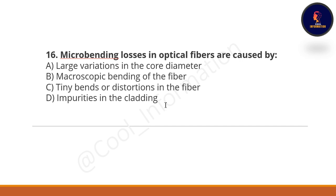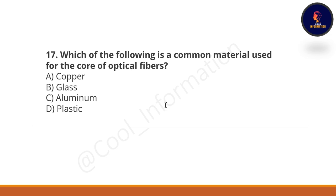Question 16: Microbending losses in optical fibers are caused by what? Option A: large variations in the core diameter. Option B: microscopic bending of the fiber. Option C: tiny bends or distortions in the fiber. Option D: impurities in the cladding. The correct option is C — tiny bends or distortions in the fiber.